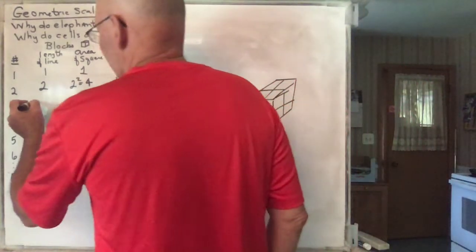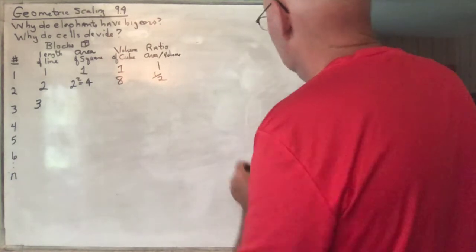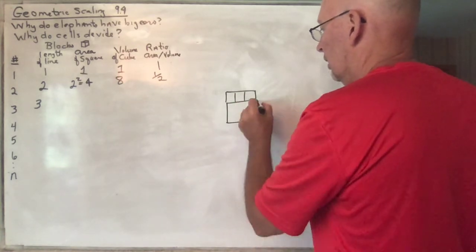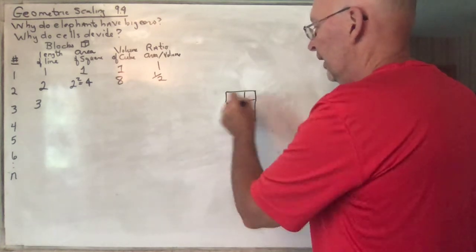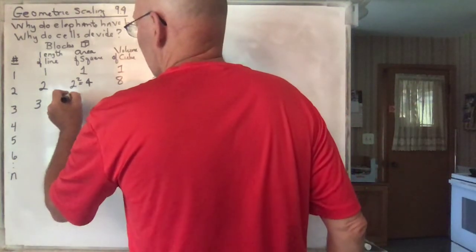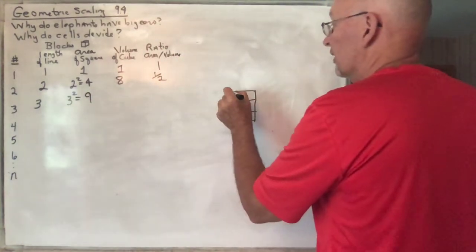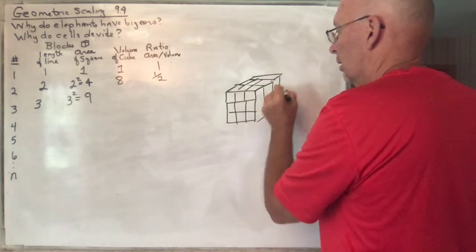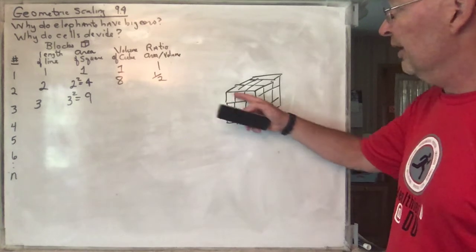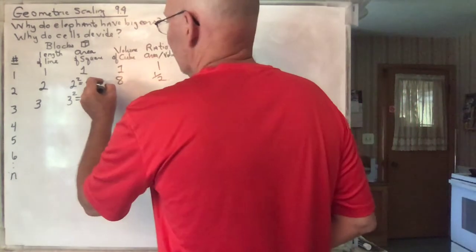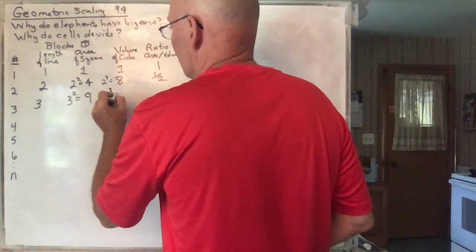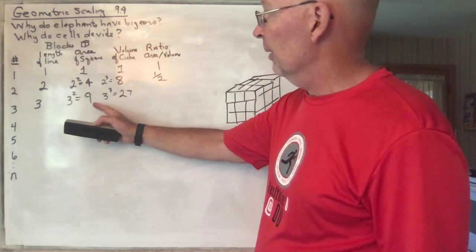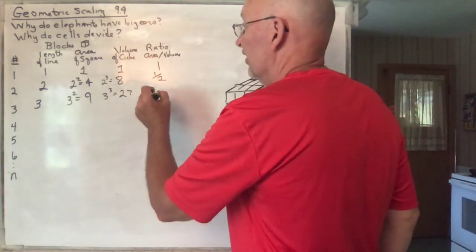Let's go to three. You put three of them in a row. If you make a square, you're going to have three by three, which is nine — that's three squared. If you make a cube, it's going to be three by three by three, so it's going to be 27, which is three cubed. And the ratio of area divided by volume is nine over 27, which is one third.